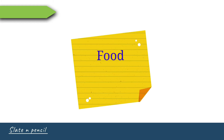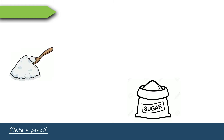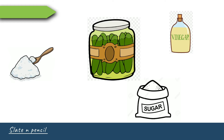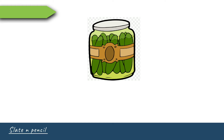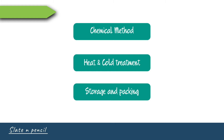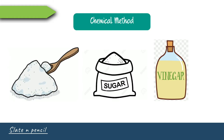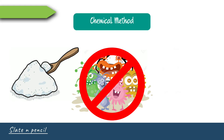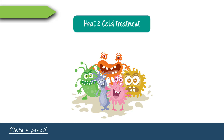Food preservation is a method to conserve food from getting spoiled over time. Salt, sugar, and oil have been added to food items meant to be kept for longer periods since ages — these are traditional preservatives. Common methods of food preservation include chemical methods, heat or cold treatment, and storage and packaging. Chemical methods include adding preservatives like salt, sugar, vinegar, and oil to inhibit microbial growth.